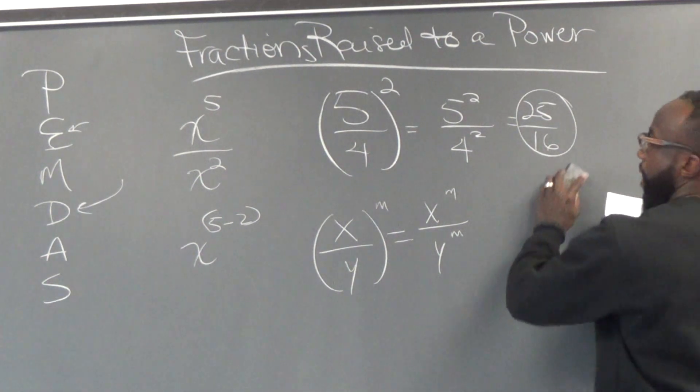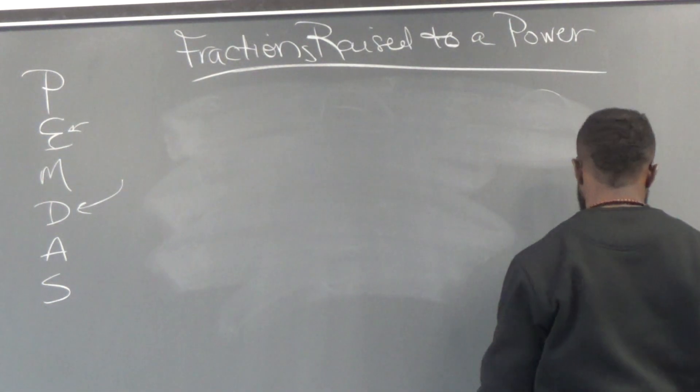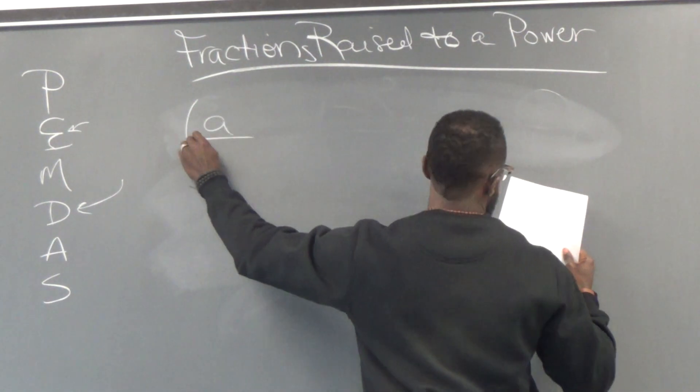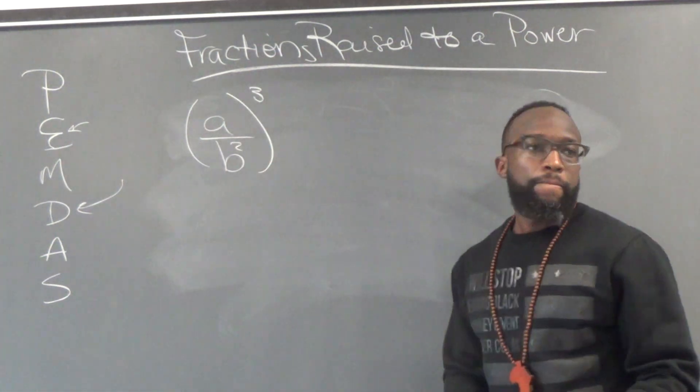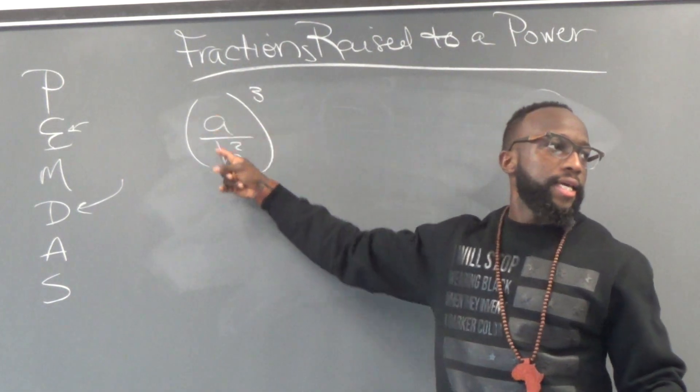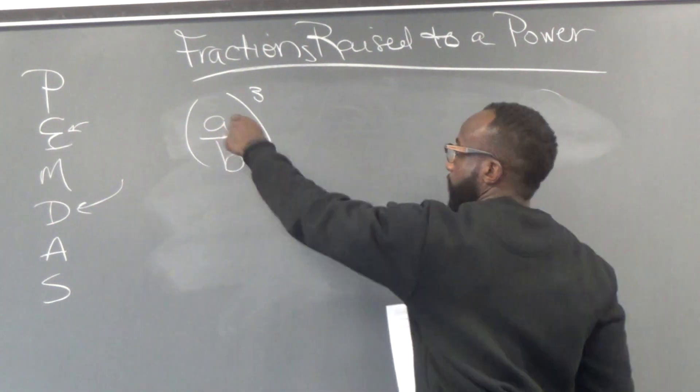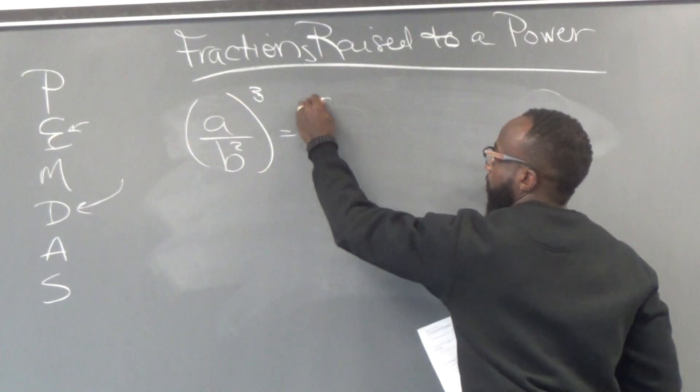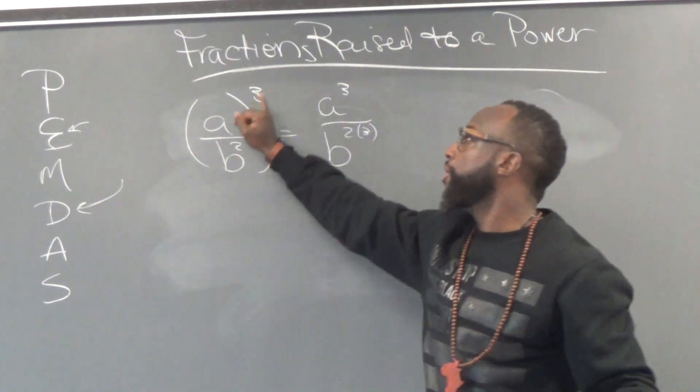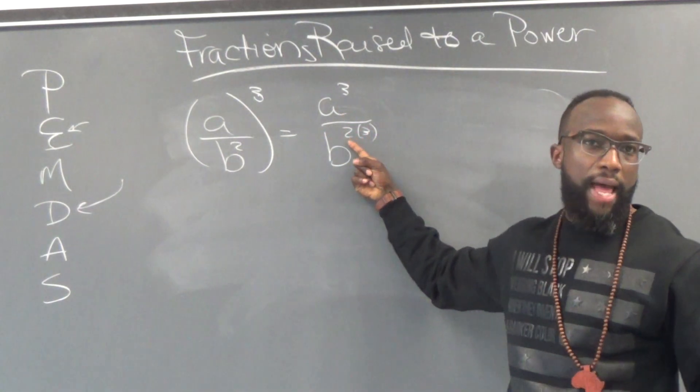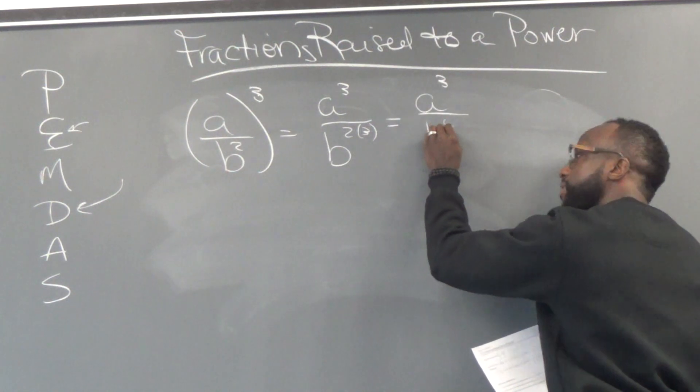So let's look at some actual problems. Let's look at number one. Number one says a over b to the second power, all raised to the third power. You can't do anything inside of parentheses. They're not like terms. But what you can do is raise everything to the exponents, everything to the third power. So here we go. A to the third, and then you got to have b to the second to the third. Remember the skill from before. Whenever you have a power raised to a power, you multiply the exponents. So your solution ends up being a to the third over b to the sixth power.